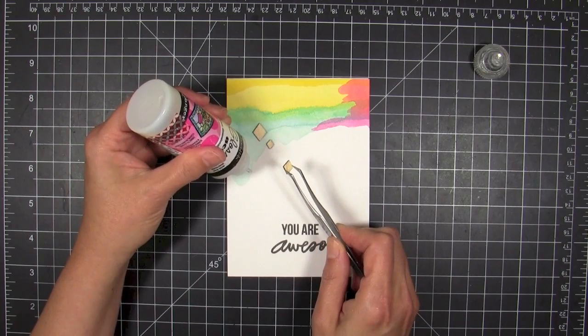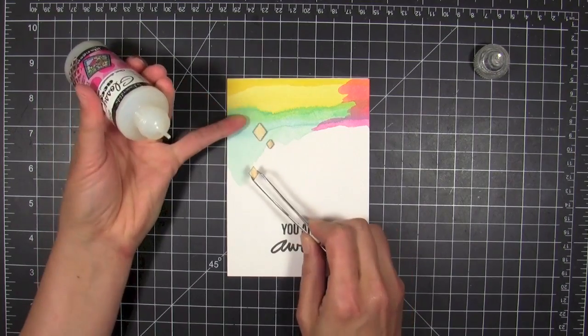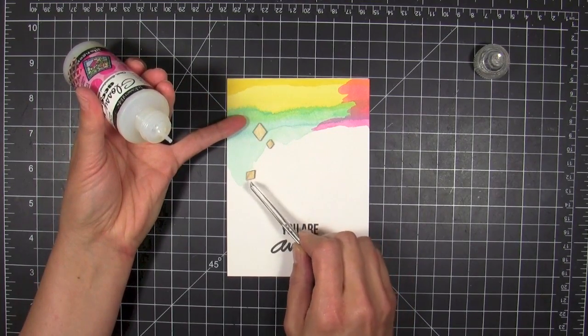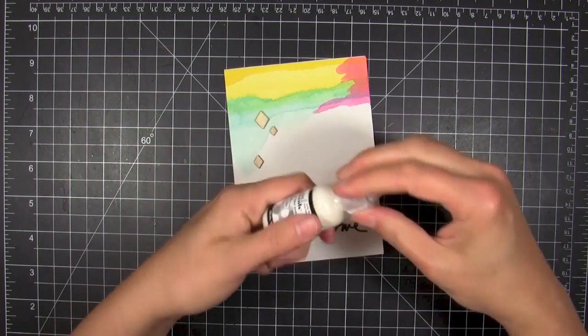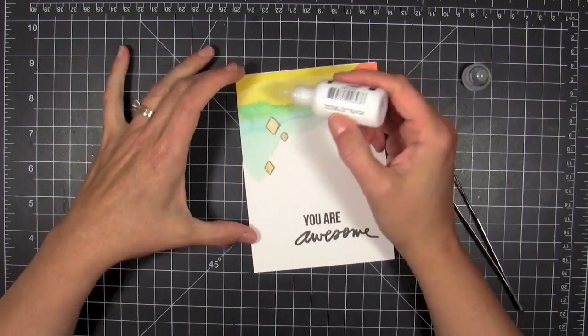I'm using glossy accents. You could use glue dots if you wanted to, but I really like glossy accents for this because it dries clear and sets up pretty quickly. As you can see I kind of bungled that and that's why I got to use my tweezers.